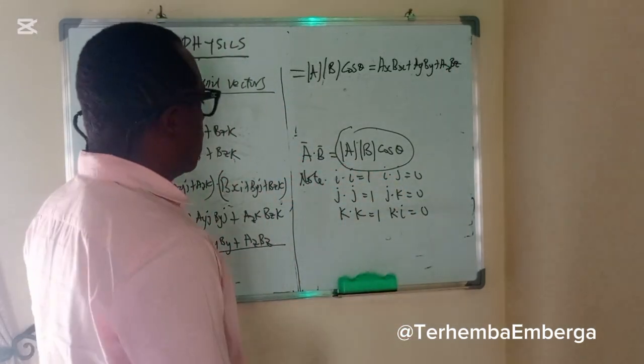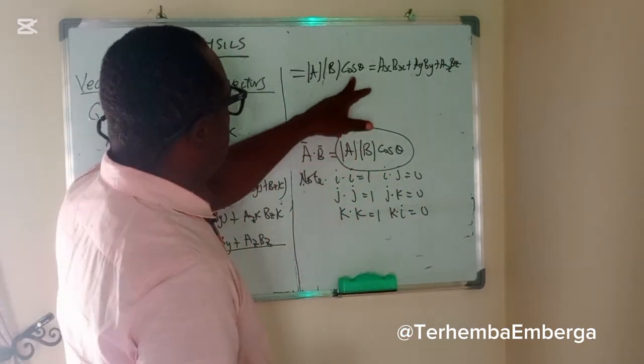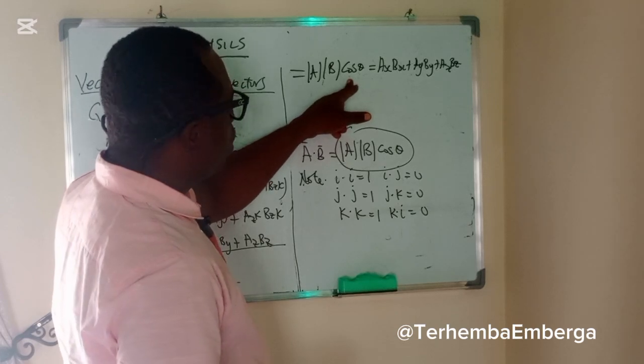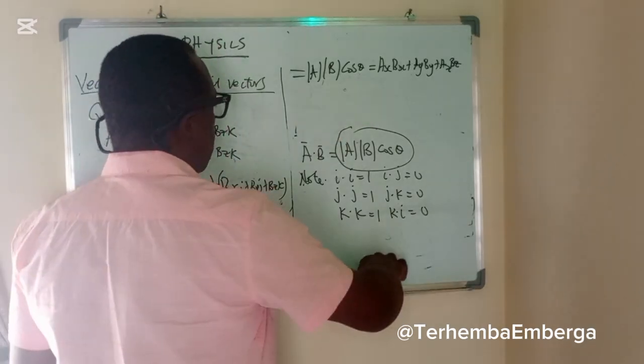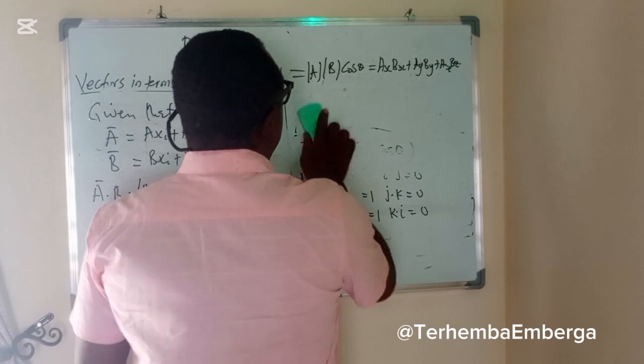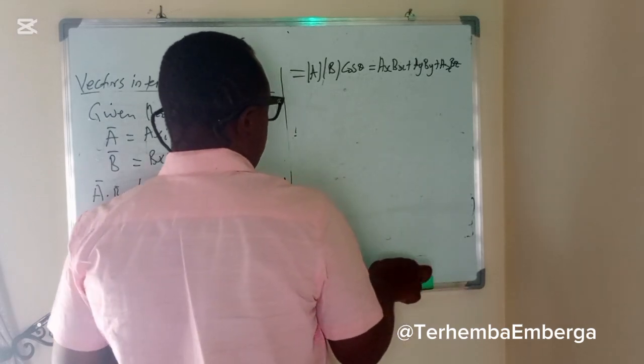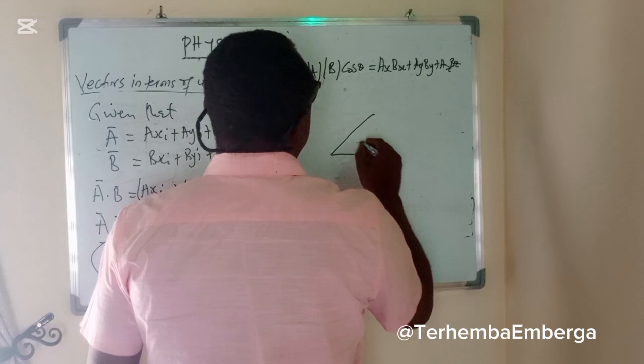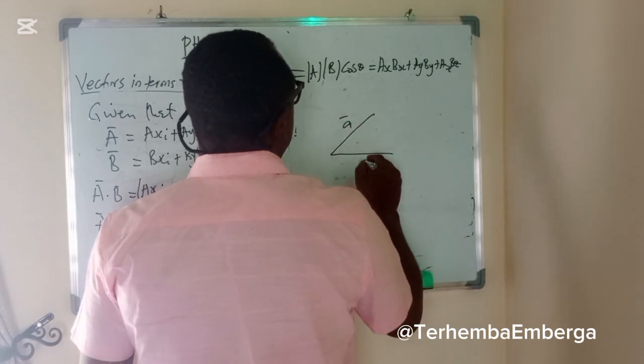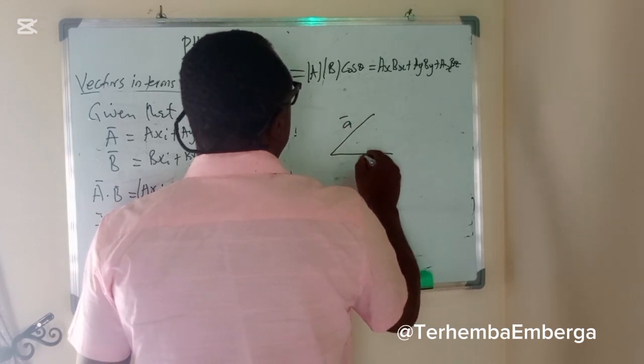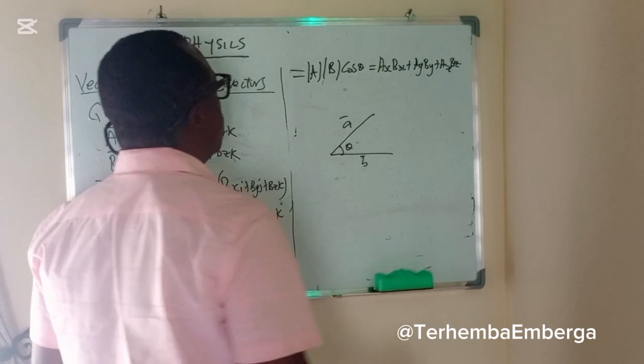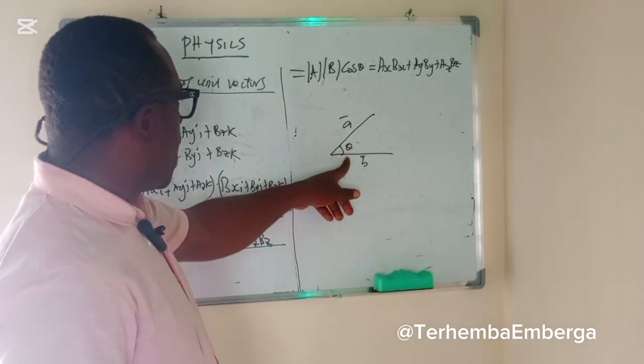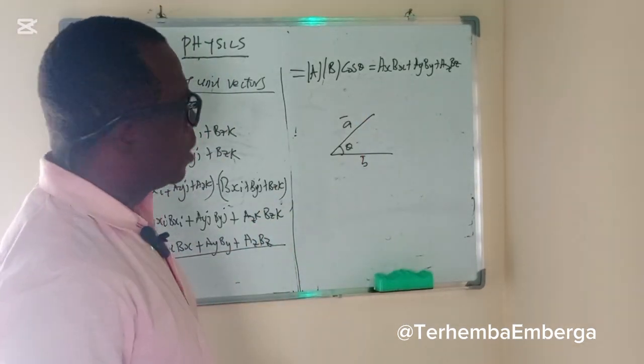What we are looking at is the angle between the vectors. Assuming you have vector A and vector B, and vector B is inclined at an angle, that angle is what we are looking at.